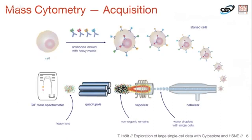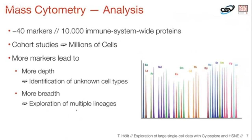The workflow is basically like this: the cells come in, they are labeled with heavy metals, and then they go into a glass pipe where every cell is contained in a single water droplet. It is shot through a vaporizer where the whole cell is burned, and out comes a cloud of non-organic remains. We only have the heavy metals that were attached, and then we measure this in time-of-flight fashion in the mass spectrometer. The signal gives really nice data with very sharp peaks, very little overlap, and very little noise.